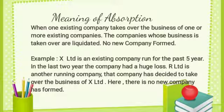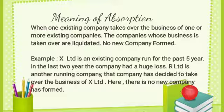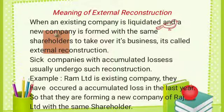Selling company's business may or may not be carried on in future. Absorption: when one existing company takes over the business of one or more existing companies, the companies whose business is taken over are liquidated. No new company is formed in this process. A weaker existing company is overpowered by an existing leading company. In case of absorption, only one company survives and all other companies lose their identity. For example, X Limited is an existing company running for the past five years; in the last two years it had huge losses. OR Limited is another running company that decided to take over the business of X Limited. No new company is formed here.